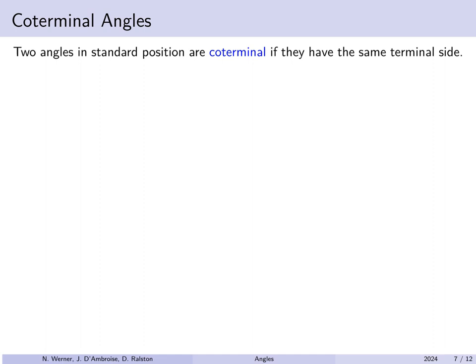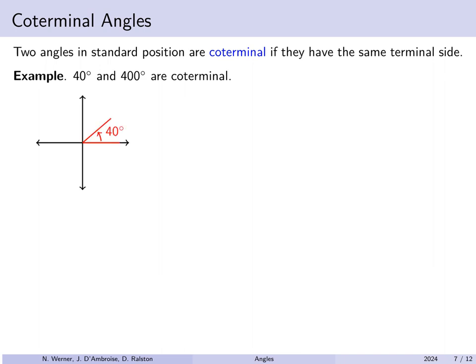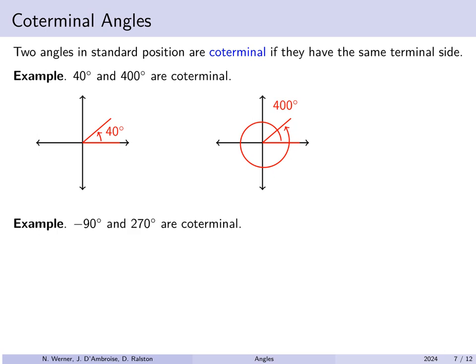Two angles in standard position are called coterminal if they have the same terminal side. They share the same initial side because they're in standard position, and coterminal means they also share the same terminal side. For example, the 400-degree angle is coterminal with 40 degrees: both terminal sides land on the same ray. Another example — negative 90 degrees (a quarter circle clockwise) is coterminal with positive 270 degrees (three quarters counterclockwise). They're not the same angle, but they are coterminal.